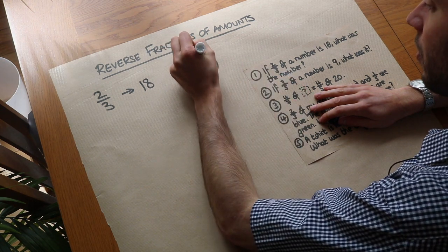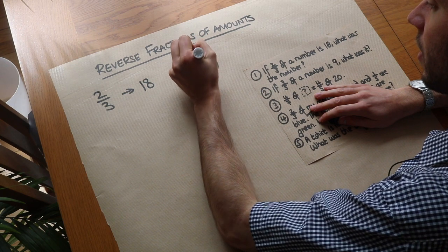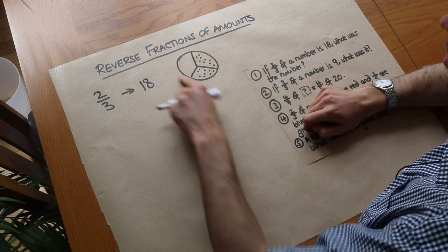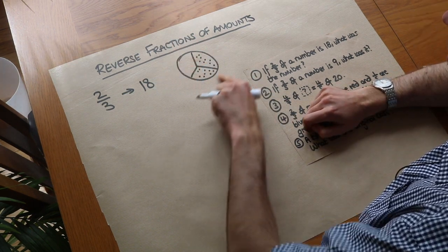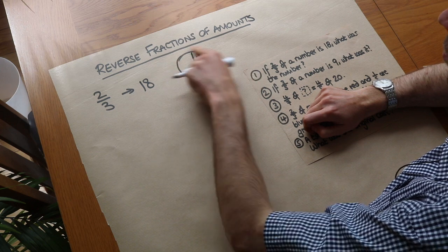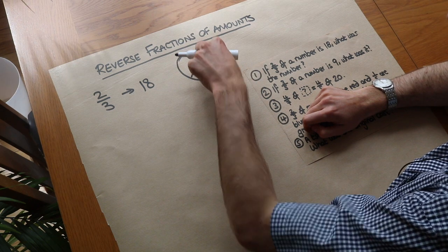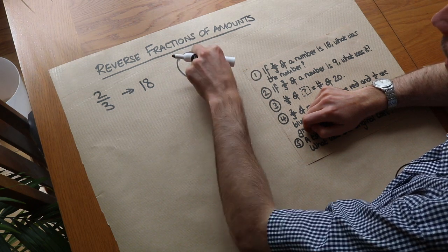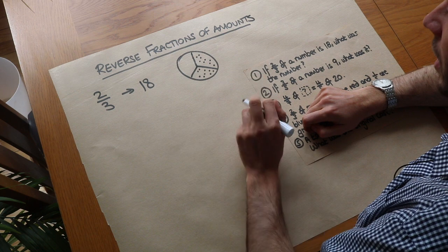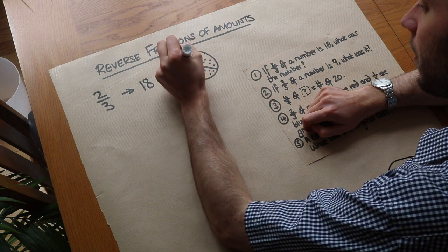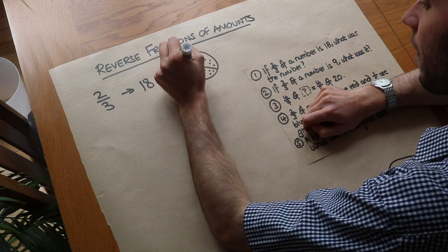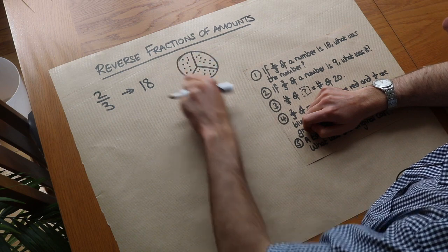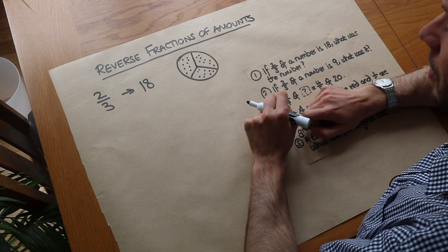So that means we could have nine dots here and nine things here. Two-thirds of the whole was 18, so we've got a third of it here and a third of it here, nine dots in each. Now if we had nine dots in the other one, we could see that we'd have 27 dots in total.